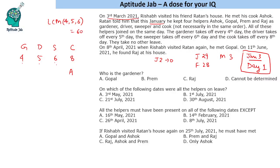Now moving ahead: on 8th April, after 3rd March, we need 28 more days in March plus 8 days in April, which is 36 days. Adding to the original 60th day gives us the 96th day. On this day, the gardener, driver, and sweeper are all on leave. Reshap met Gopal, so Gopal is the driver.